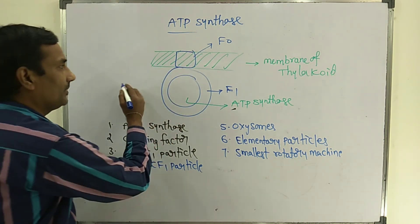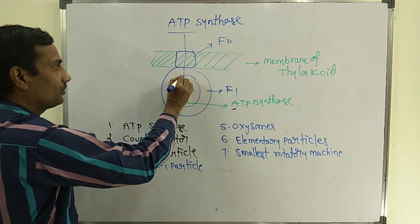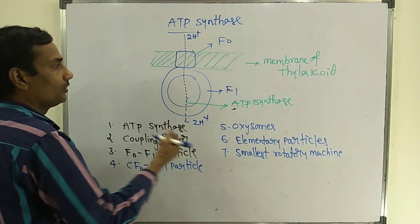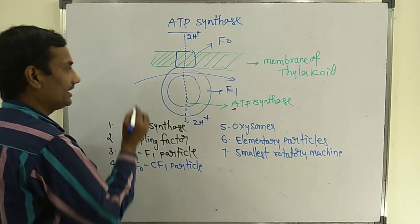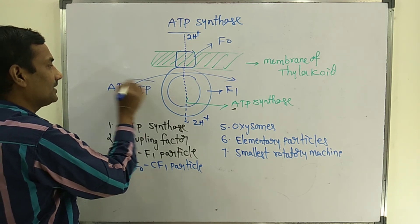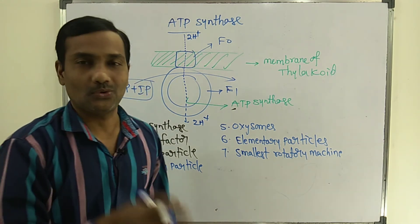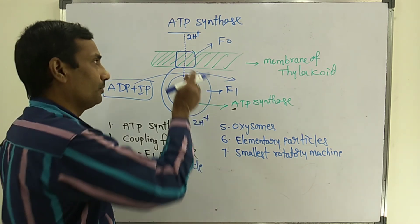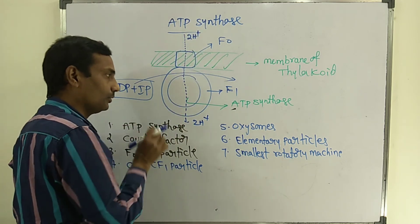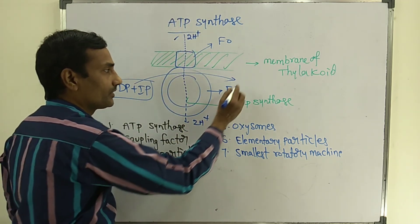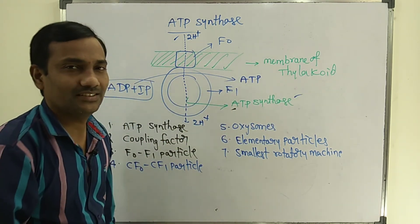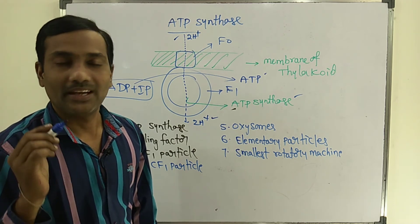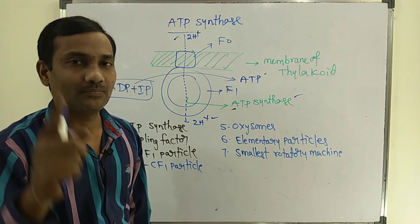Whenever two protons pass through F0, F1 particles, that helps in synthesis of ATP. ADP plus inorganic phosphate — adenosine diphosphate and inorganic phosphates — are found in the stroma. When they combine, because of the force and energy liberated while passing through F0, F1 particles, the two protons help in formation of ATP, because ATP synthase enzyme — the catalyst — is there. For two protons, one ATP is formed.